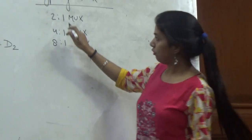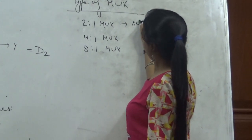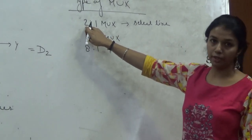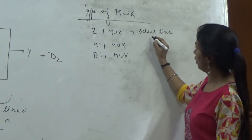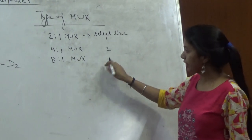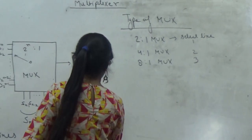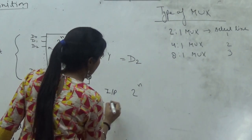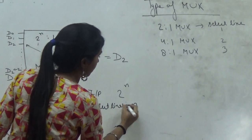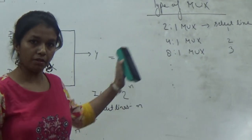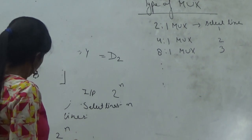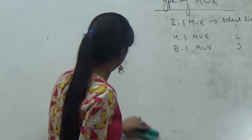What will be the select lines? For 2-to-1, two inputs satisfy the value of n equal to 1. Four inputs satisfy n equal to 2. Eight inputs satisfy n equal to 3. This is because 2 raised to the power n equals the number of inputs, and n is the number of select lines. So many multiplexers can be made using this formula. The number of select lines depends upon the number of inputs.